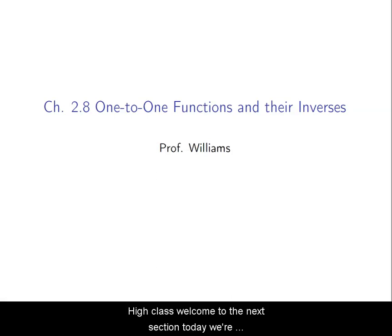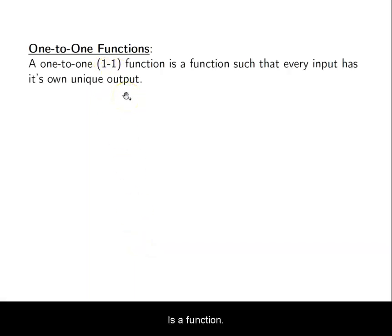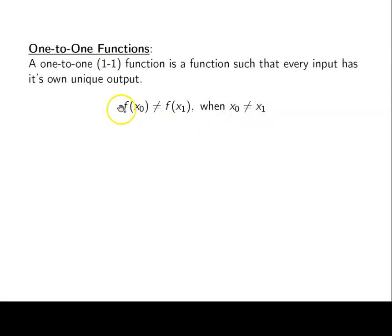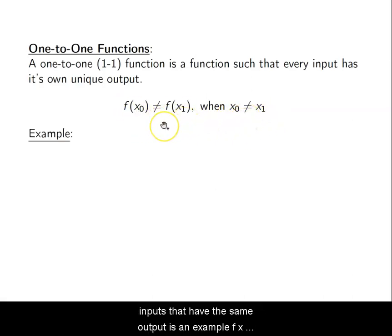Hi class, welcome to the next section. Today we're going to talk about chapter 2.8, one-to-one functions and their inverses. A one-to-one function, notated by 1-1, is a function such that every input has its own unique output. So if x₀ and x₁ are different values, their outputs have to be different also — no two inputs share the same output.